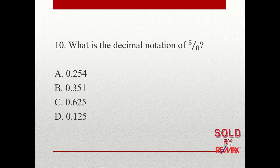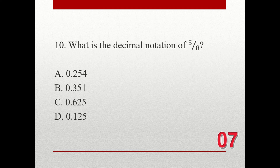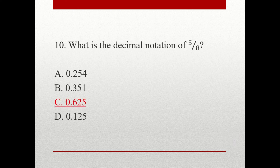Question number 10. What is the decimal notation of 5 over 8? A. 0.254. B. 0.351. C. 0.625. D. 0.125. The correct answer is C. 0.625.